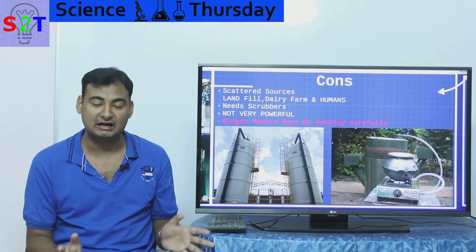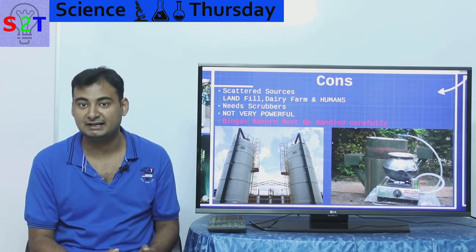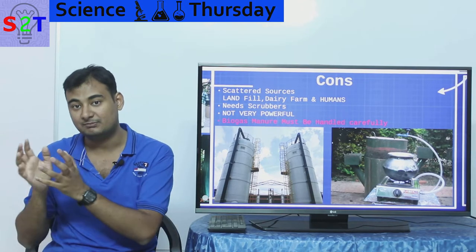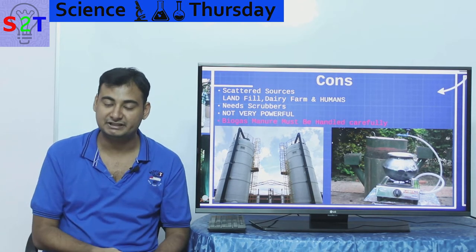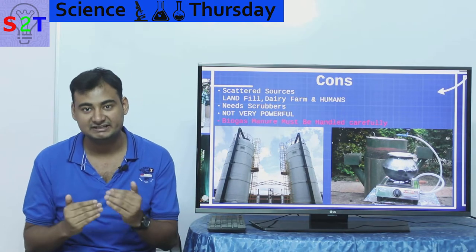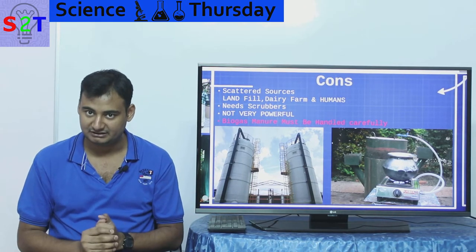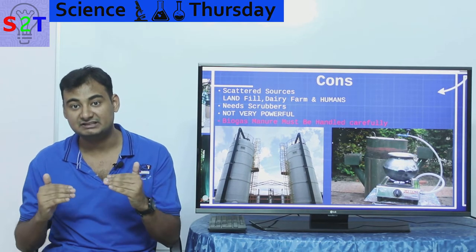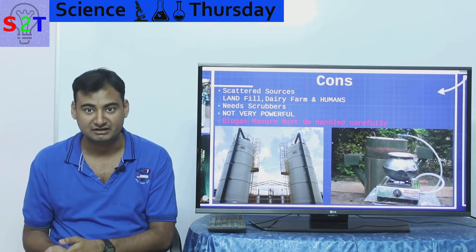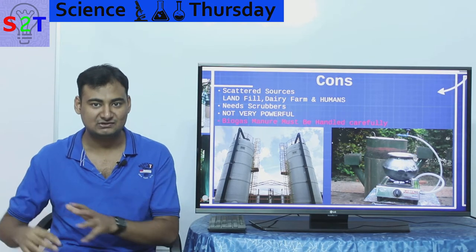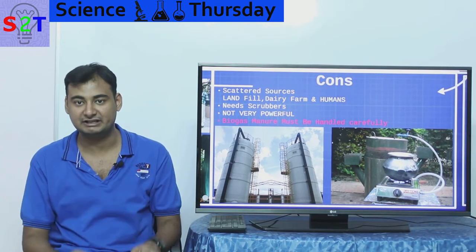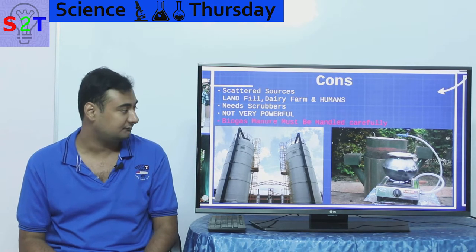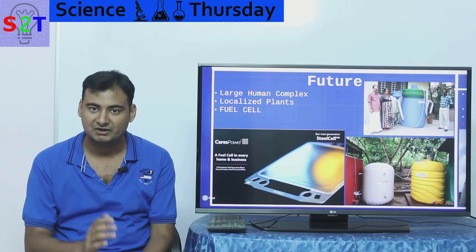The bio-manure that comes out must be handled carefully — not because it's dangerous or toxic, but because if you're dumping it onto fertile land, you must check the soil content first. Plant life is very choosy in its diet. Too much nitrogen can harm the plant, and anything that changes the soil pH level can also cause damage. So you have to be mindful — not difficult, but mindful.